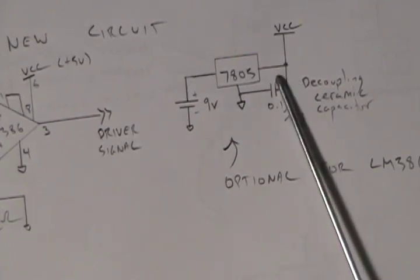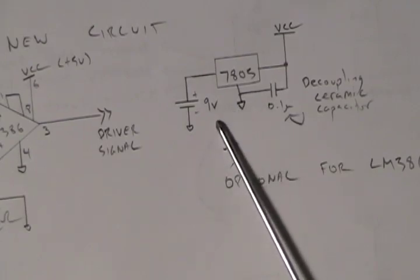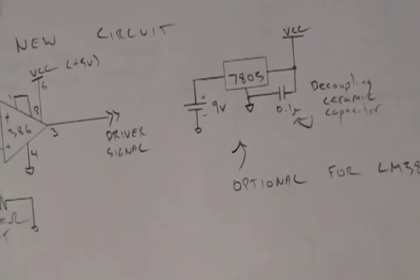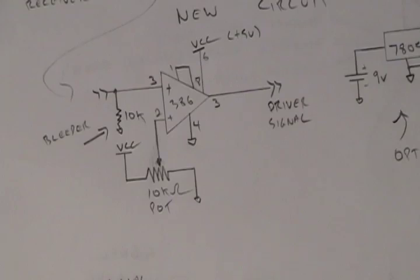Decouple the 5 volt output to ground just to help eliminate any noise. We're going to hook the input to a 9 volt battery. And this is going to be for our receiver circuit, keep in mind. Our transmitter has its own independent battery.